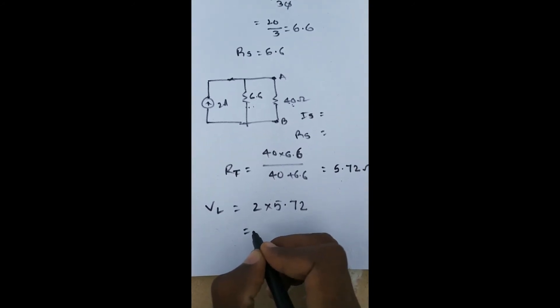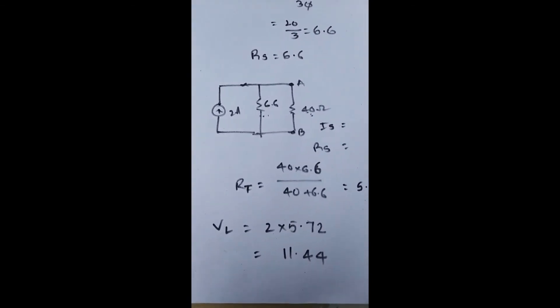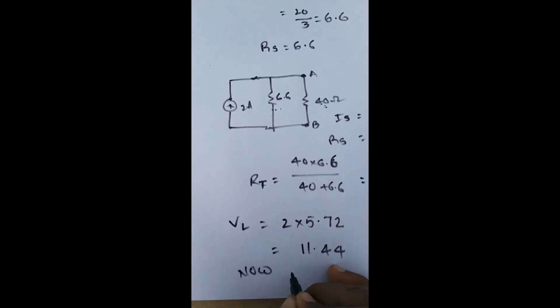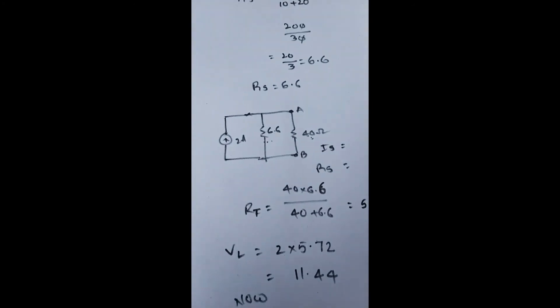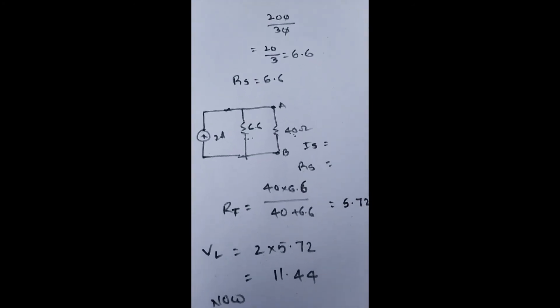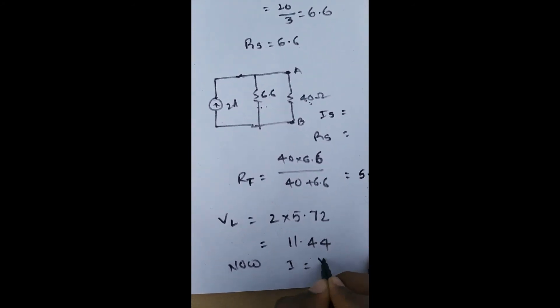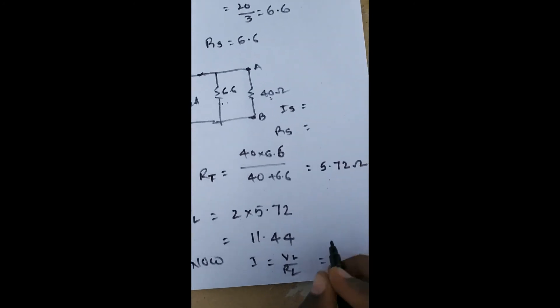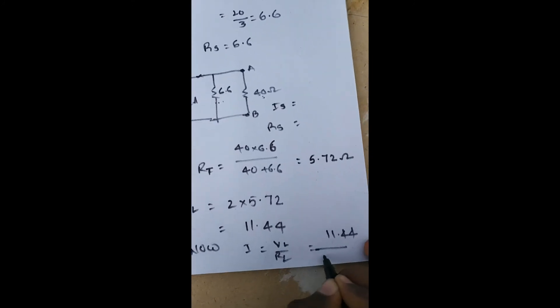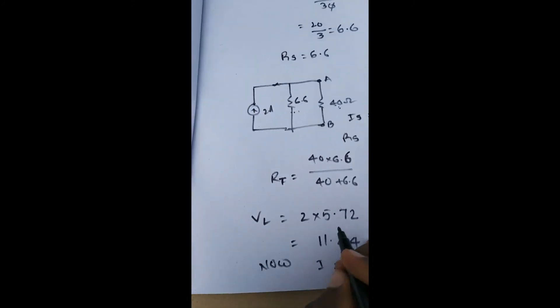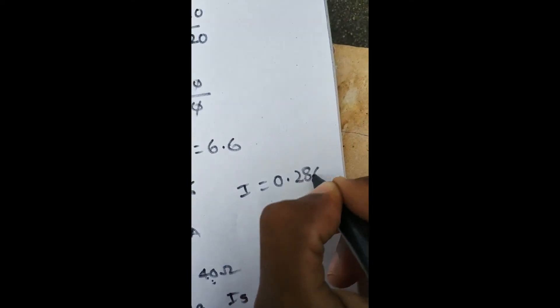VL value is 5.72 into 2, that means VL value is 11.44 volts. Now we have VL value. That means with the VL value and RL value, we can find the current through RL. So I is equal to VL by RL. We have I equal to VL 11.44 by RL which is 40. So the answer is 0.286. We have I equal to 0.286 amperes.